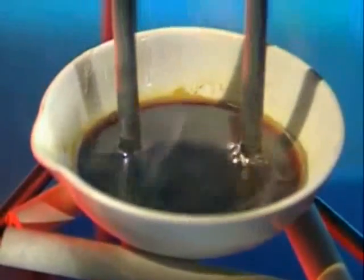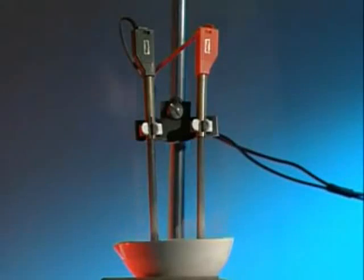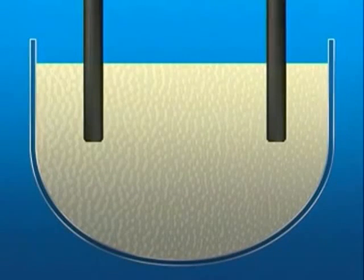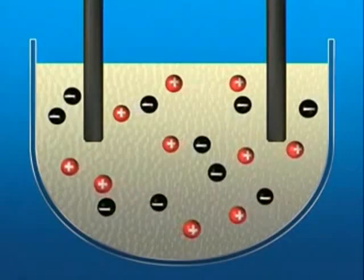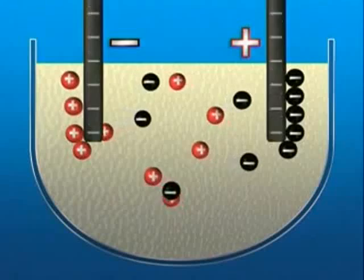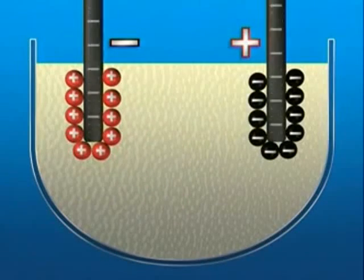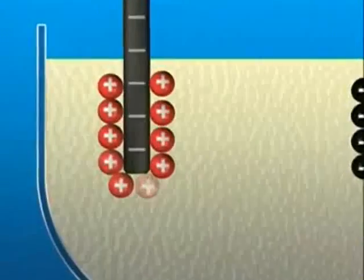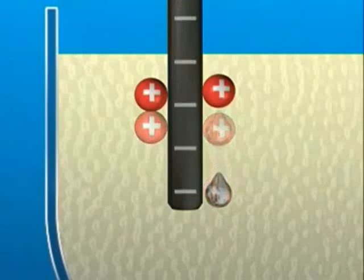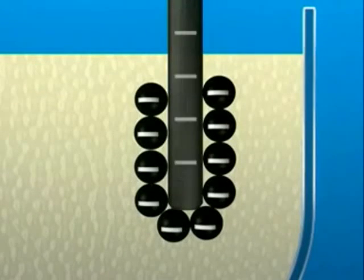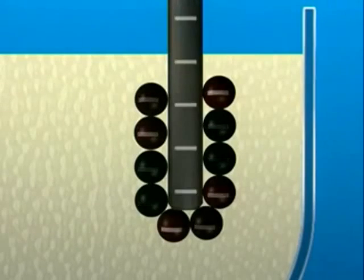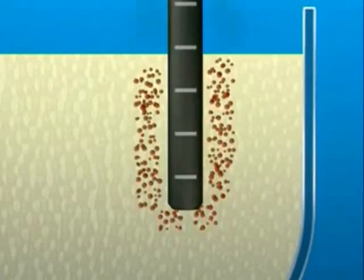So passing an electric current through molten lead bromide breaks it down into the elements lead and bromine. To work out why this happens, imagine you can see the charged particles — the ions in the compound. There are positive lead ions and negative bromide ions. Once the power supply is switched on, the lead ions are attracted to the negative electrode and the bromide ions are attracted to the positive electrode. Lead ions pick up electrons, lose their positive charge, and form lead atoms. Bromide ions give up electrons, lose their negative charge, and become bromine atoms, which form a gas.